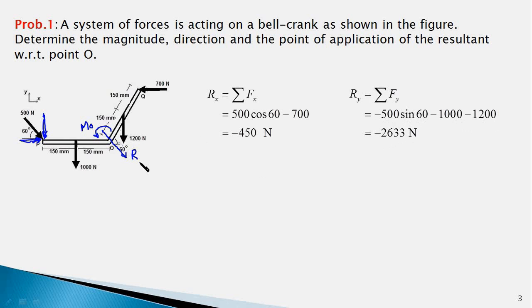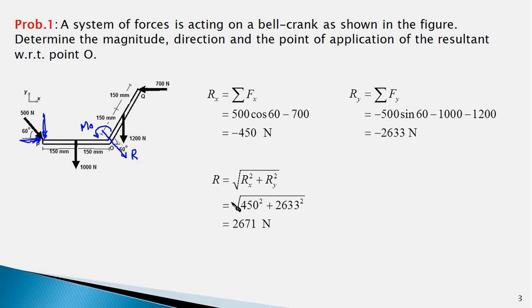We can combine the components to get the magnitude of R using the standard equation. Plugging in the values of Rx and Ry, we get R = 2671 N — that is the magnitude of the resultant force R.